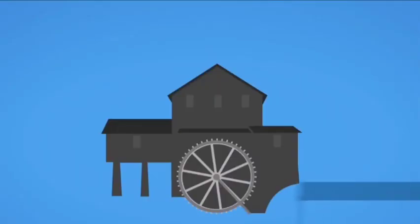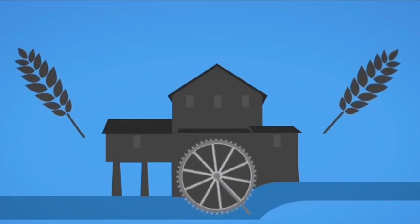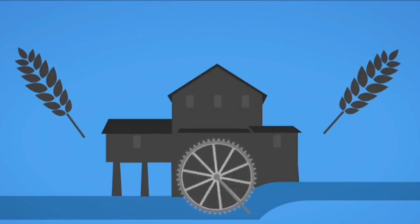The ancient Egyptians and Greeks used the energy in moving water to turn water wheels. The water wheels could move machines, and these machines helped with both farming and making food.